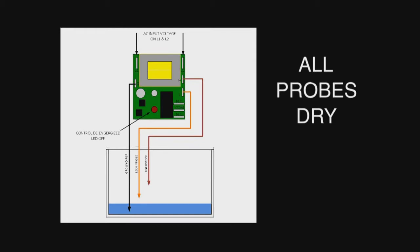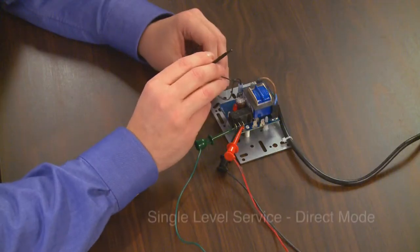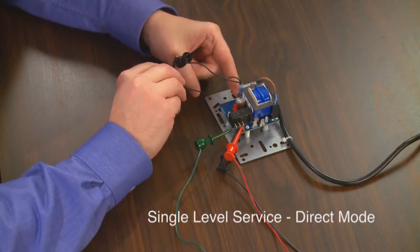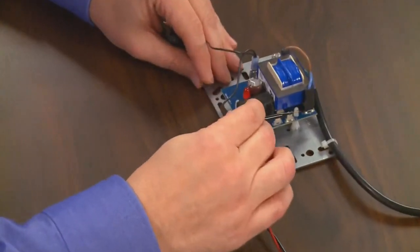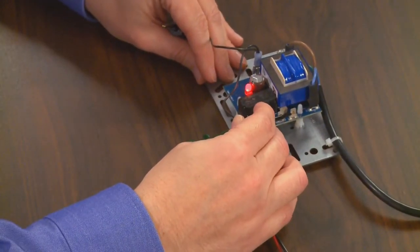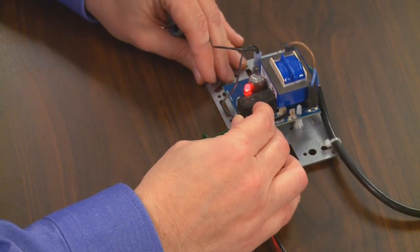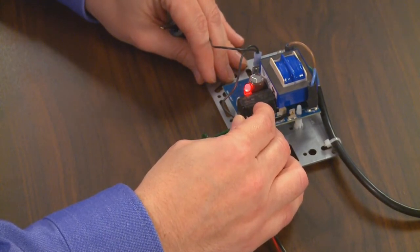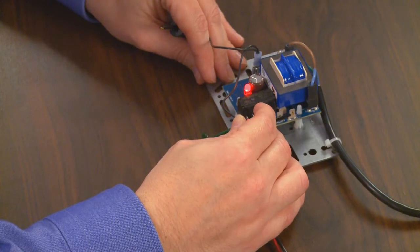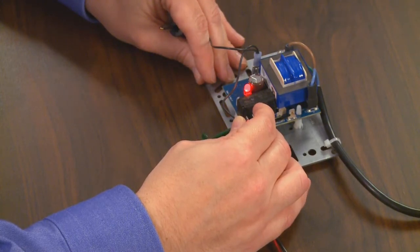Let's first do single level service. We take our jumper from the ground reference probe connection to our high probe connection and as I make that contact the LED came on and the relay is energized simulating that the probe is wet.